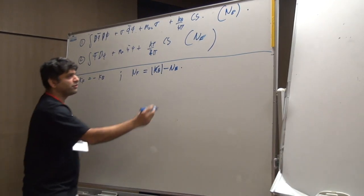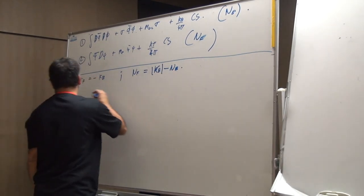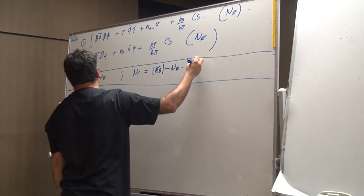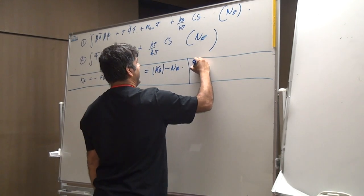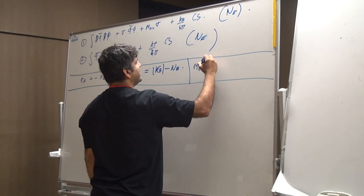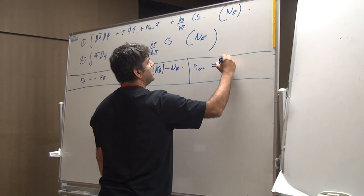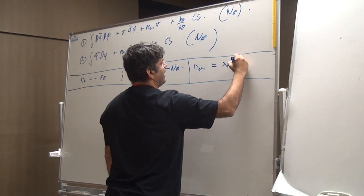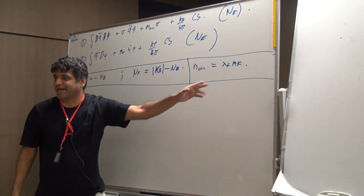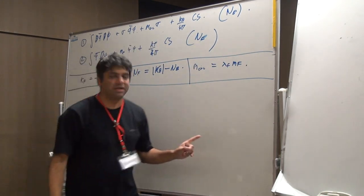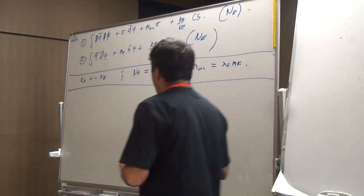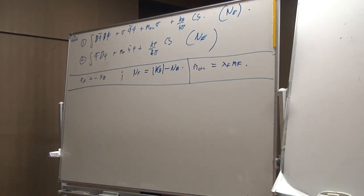There's also a relationship between the masses, which is roughly M_crit equal to λ_F M_F. I may have got the sign and the factor wrong — look it up in my paper. So this is the claim of duality.